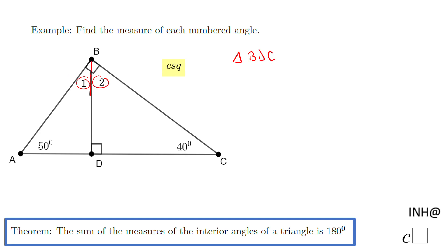This one, BDC. You'll notice in this triangle we know two angles. We know this one is 40° and this one here, which is a box, is 90°. So basically now we can find the third one because we know the sum of the measures of the interior angles is 180°.